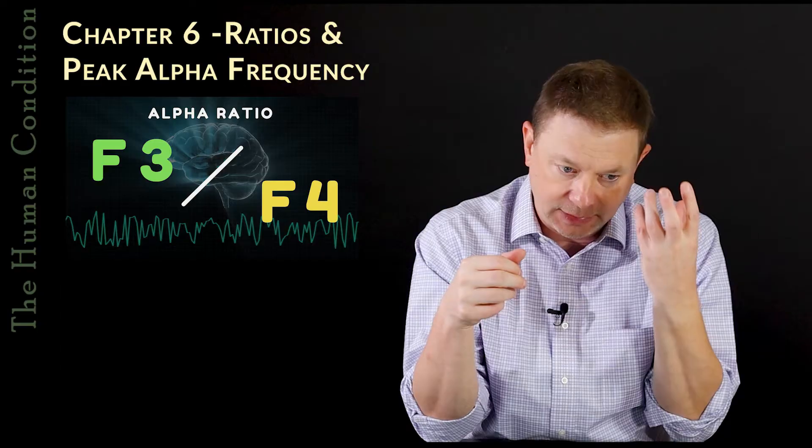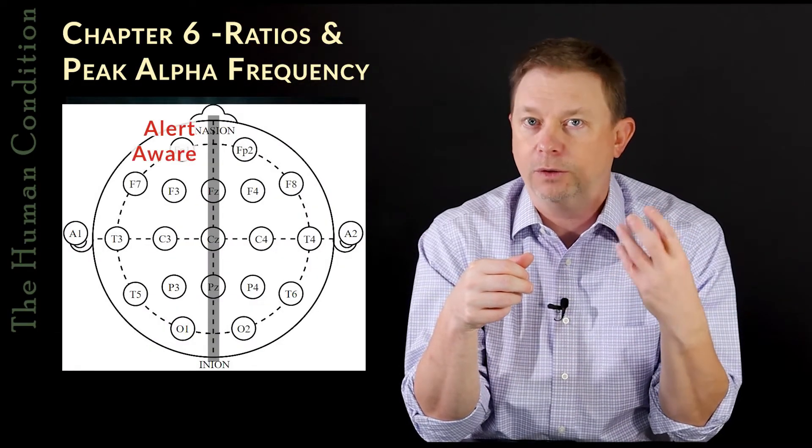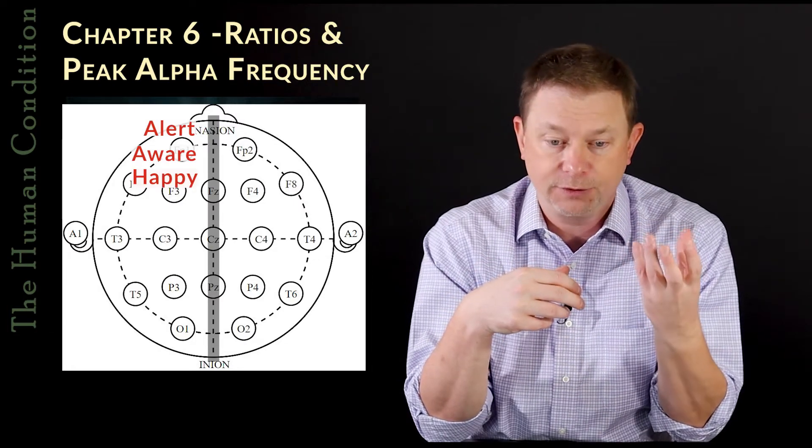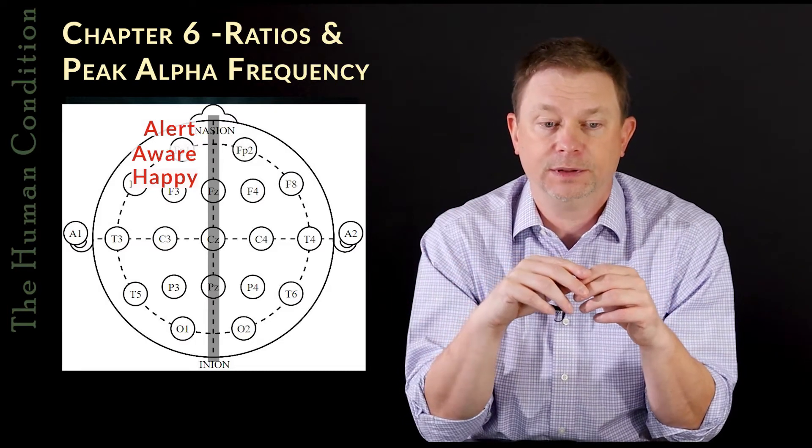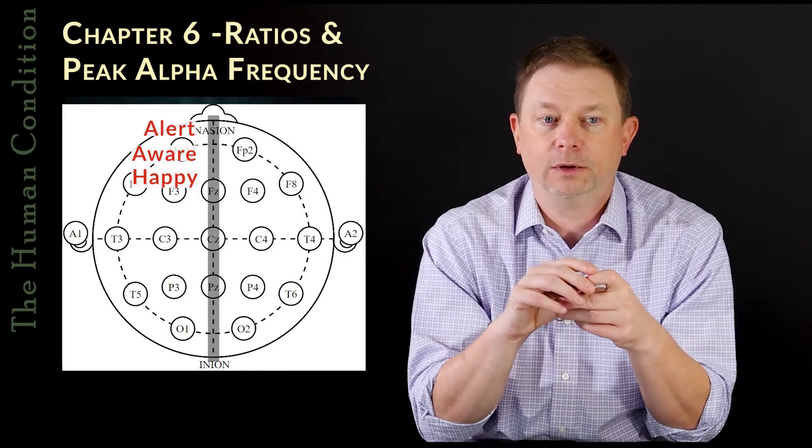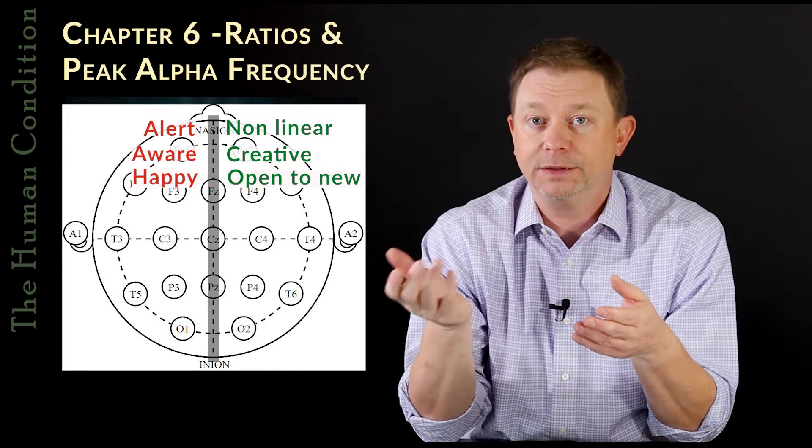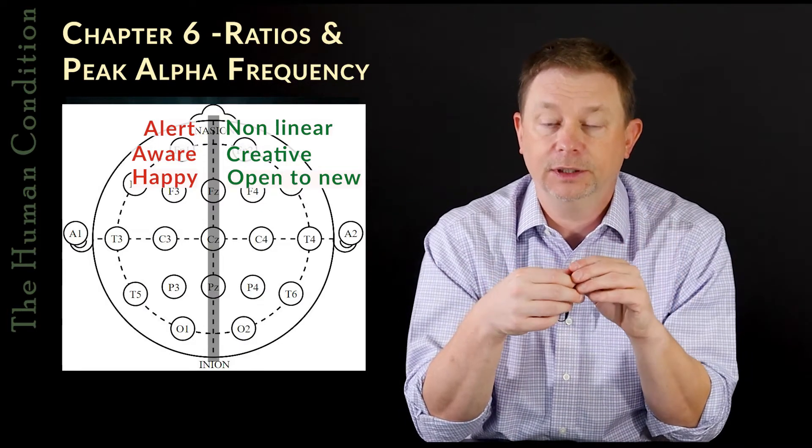Generally, the left hemisphere fires to make us alert and aware and happy. It's the approach hemisphere, the approach frontal lobe. And the right hemisphere is the avoidance hemisphere, the one that says, hey, wait a minute, I'm not sure about that. The right hemisphere is generally a little more nonlinear, a little more creative, a little bit more open to new experiences. And the left brain is a little more regimented and linear.